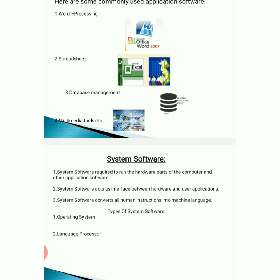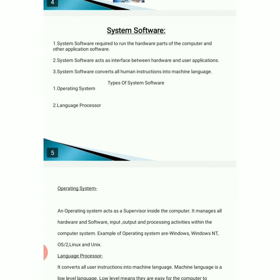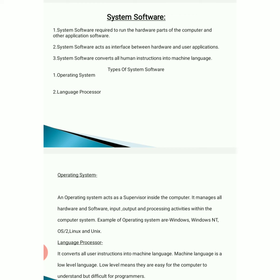The types of system software are operating system and language processor. An operating system is responsible for the functioning of all hardware parts — such as CPU, monitor, UPS, and keyboard — so that these parts function properly. The operating system is always the first software loaded into the system when we switch on our computer.